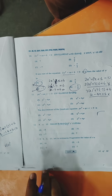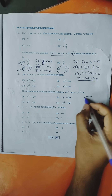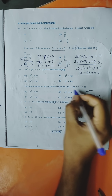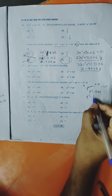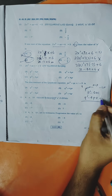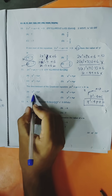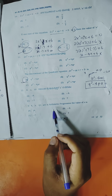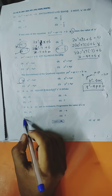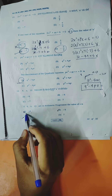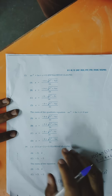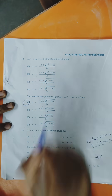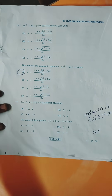Eleventh question: discriminant — find the discriminant using b² − 4ac. Identify a, b (as p), and c (as r) from the equation. The discriminant b² − 4ac becomes p² − 4r. Option with p² − 4r is the right answer. Twelfth question: after simplifying, option D is the right answer.